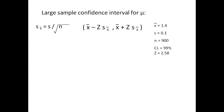A large sample confidence interval uses the lower bounds and upper bounds of x-bar minus z times s of x-bar, and x-bar plus z times s of x-bar. s of x-bar is equal to s divided by the square root of n, and we have all of our known values: x-bar equals 1.4, s equals 0.1, n equals 900, 99% confidence level, and z equals 2.58.